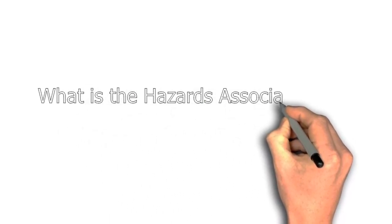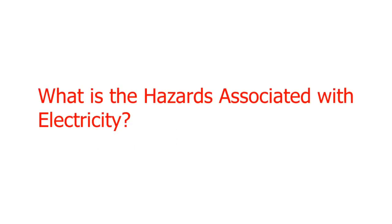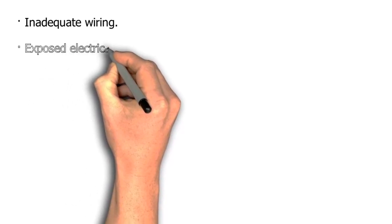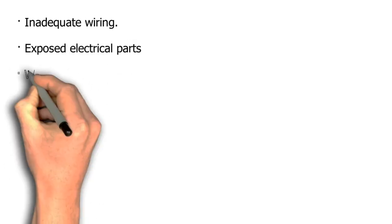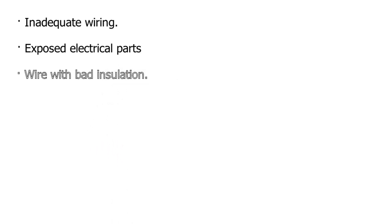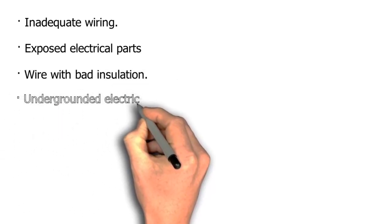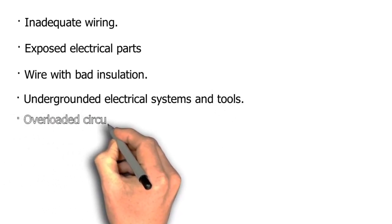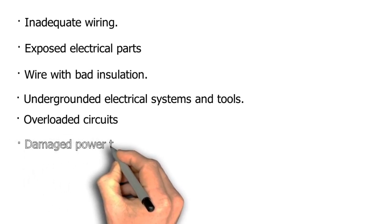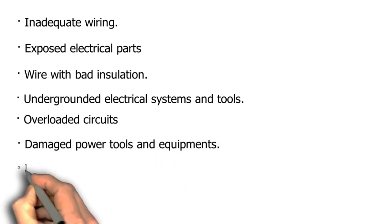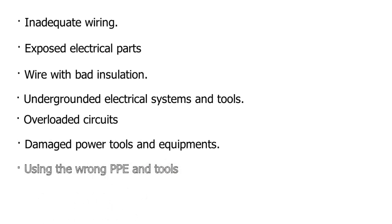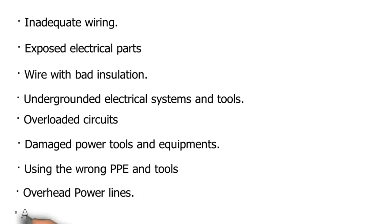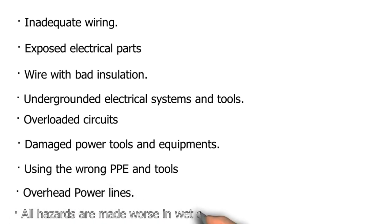What are the hazards associated with electricity? Inadequate wiring; exposed electrical parts; wire with bad insulation; ungrounded electrical systems and tools; overloaded circuits; damaged power tools and equipment; using the wrong PPE and tools; overhead power lines. All hazards are made worse in wet conditions.